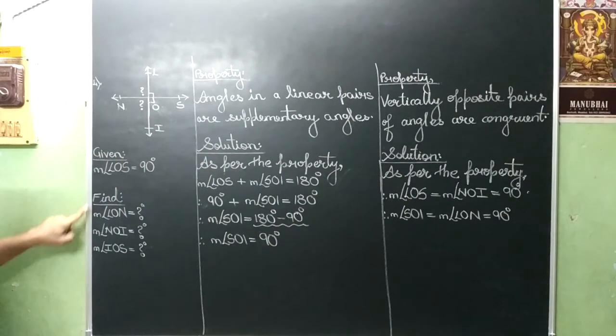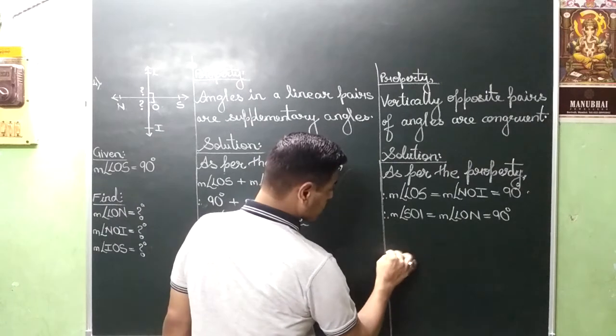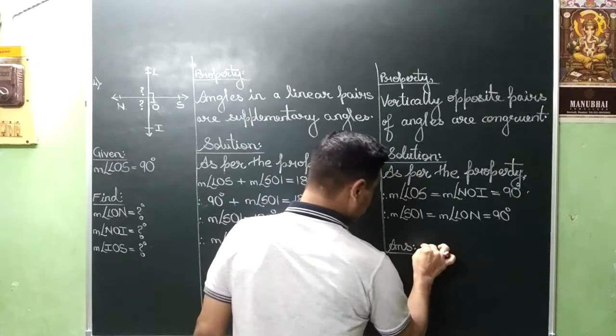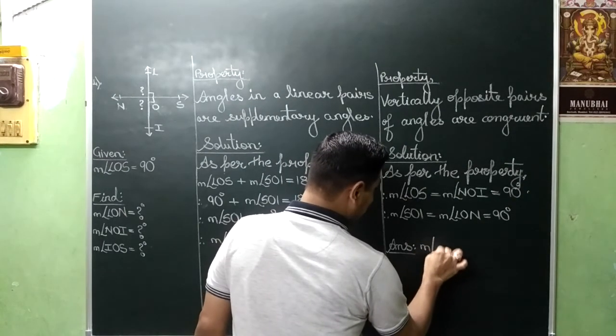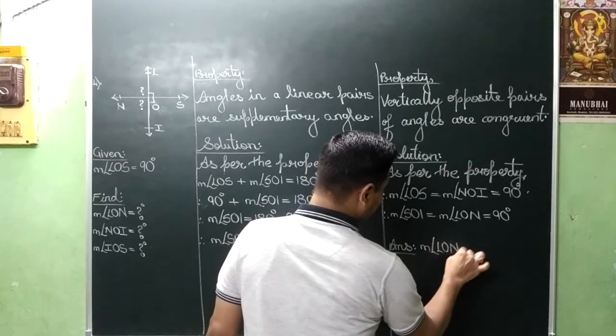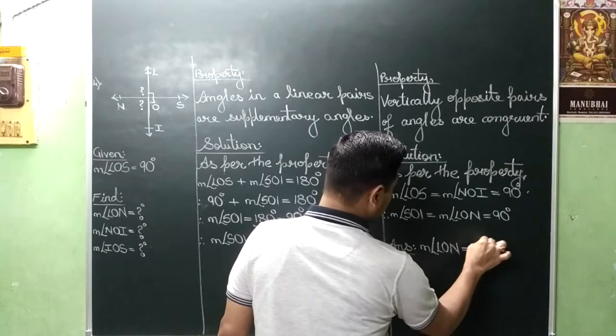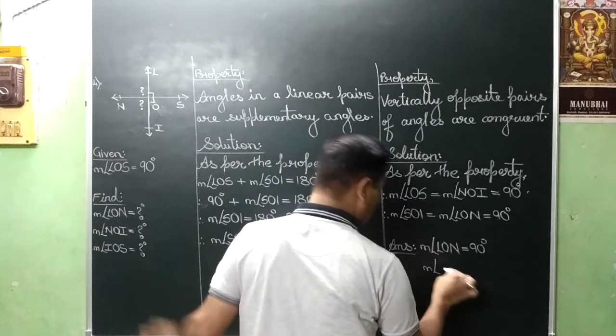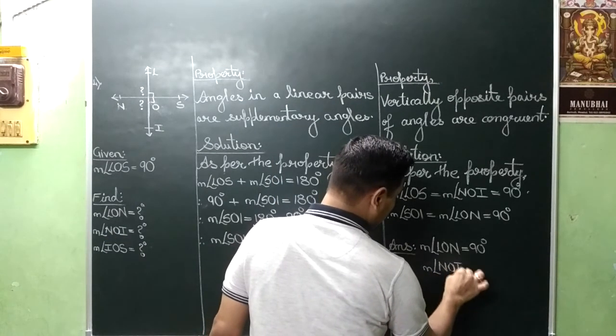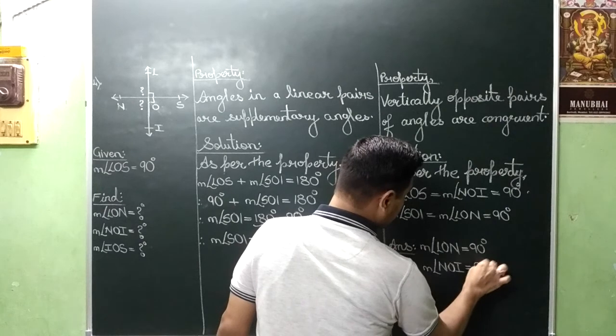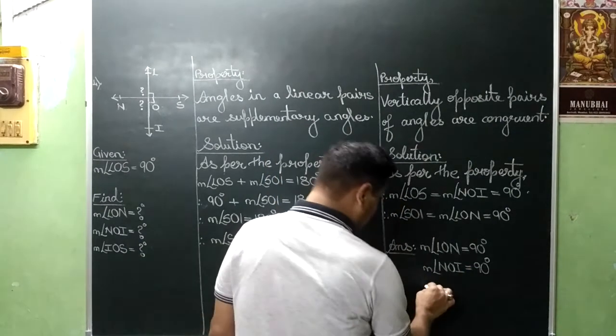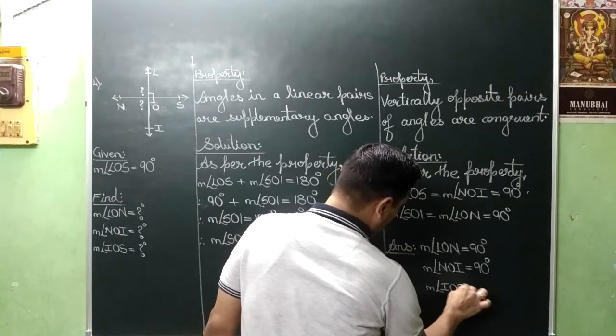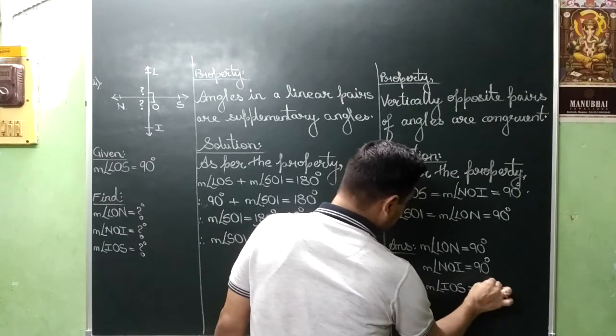Ab peta eight line leave karke final answer. So let us draw. Copying all the three angles. Measure angle NON which is 90 degree. Measure angle NOI, this is also 90 degree. And measure angle IOS, this is also 90 degree. Clear?